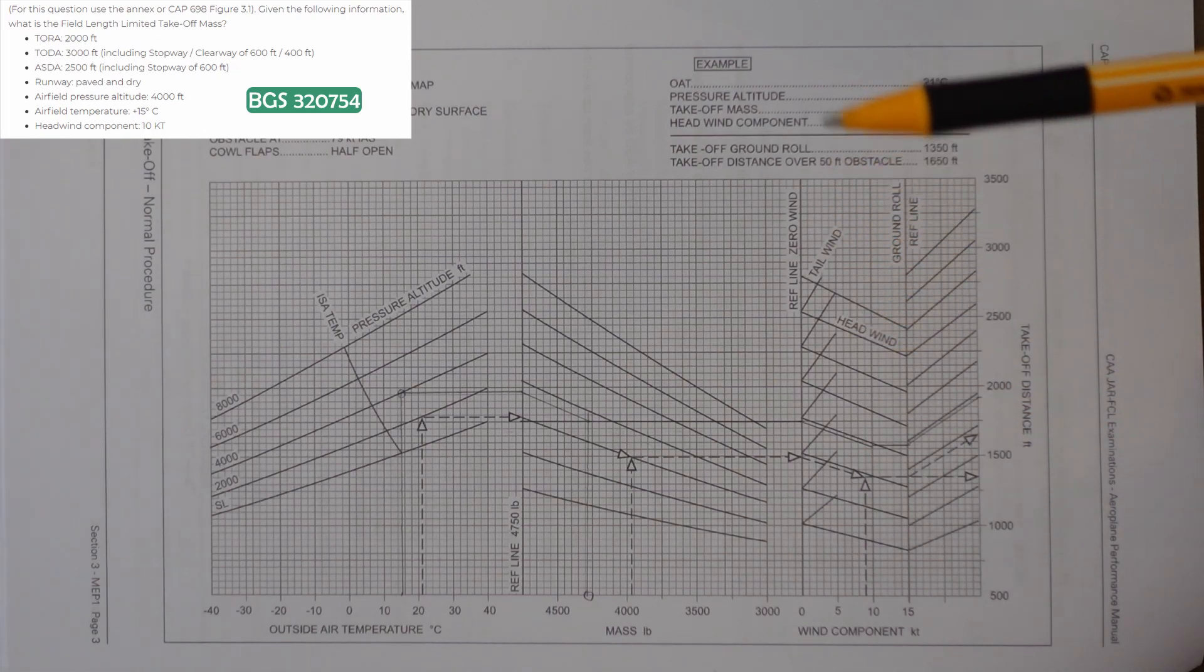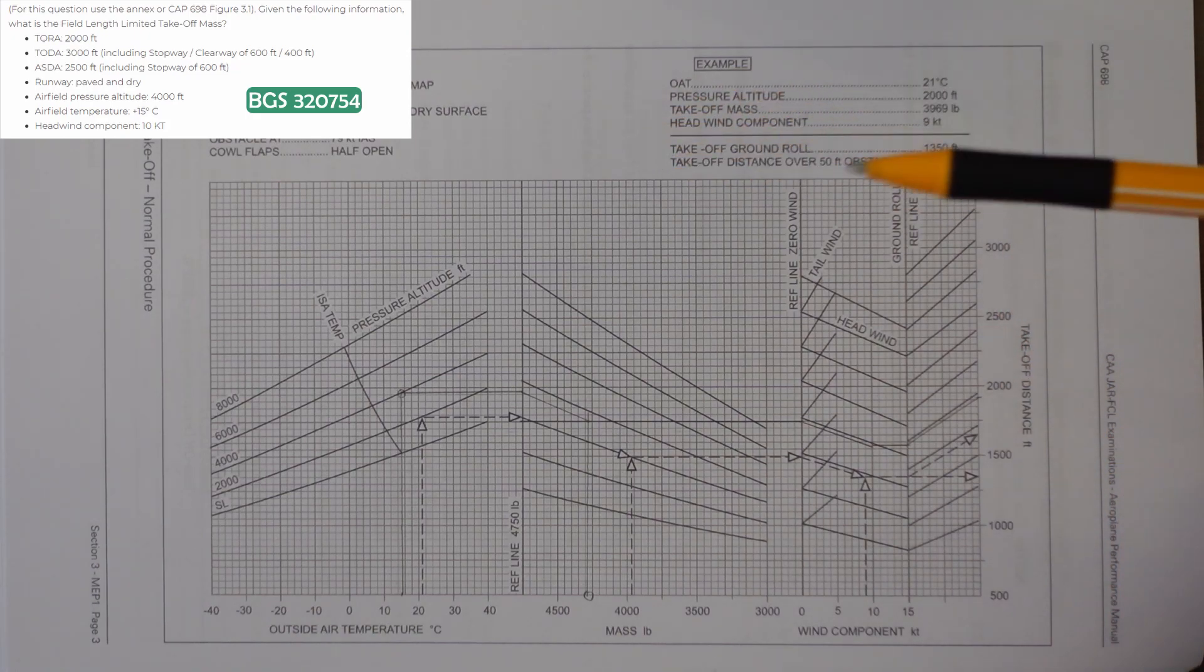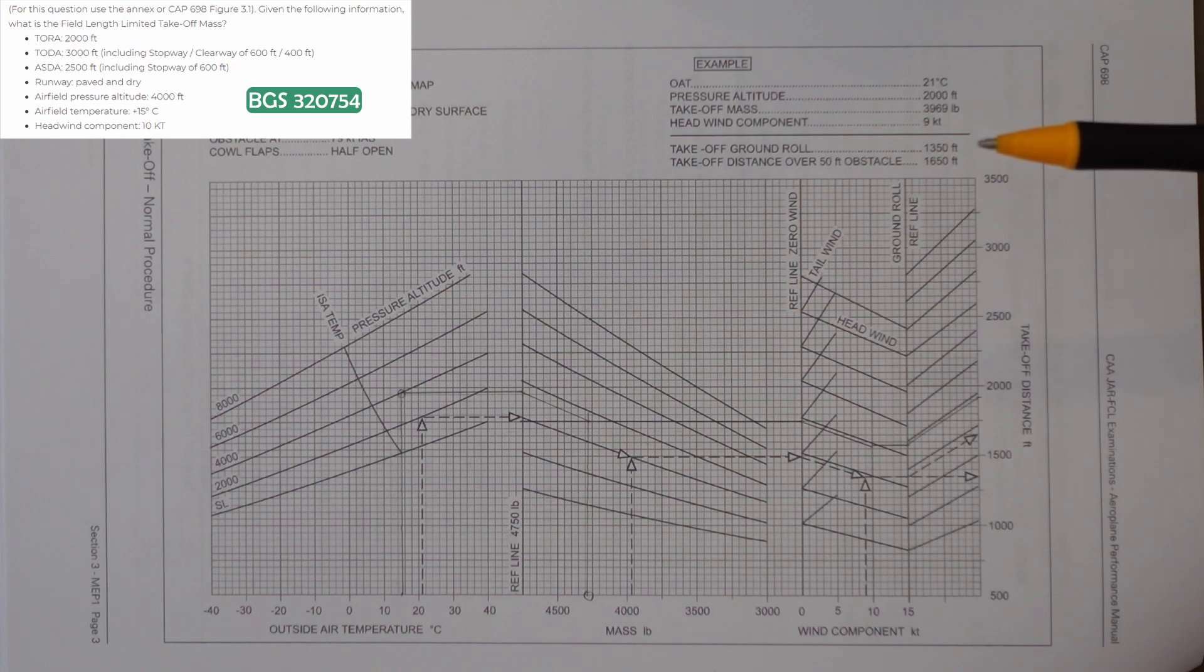So the first thing I'm going to do is find out what our limiting distances are, just as we did in the previous example. Then we can go back into the graph with all that information and find an answer. Just as before, I'm going to lay it out in a table.